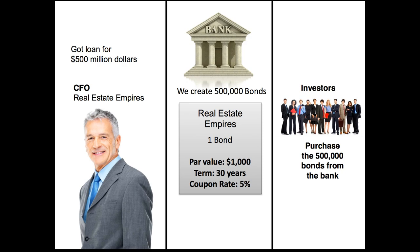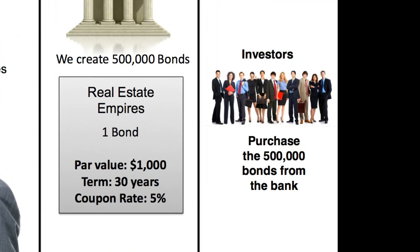In Lesson 1 we had a scenario where we had a CFO named Jack. Jack was responsible for getting a $500 million loan from the bank in order to build a new headquarters building for his company. The bank created 500,000 bonds and issued all these bonds to investors. What I'm going to do is look at the bonds from the investor's standpoint — take one of these individuals and look at one of their bonds more in depth.